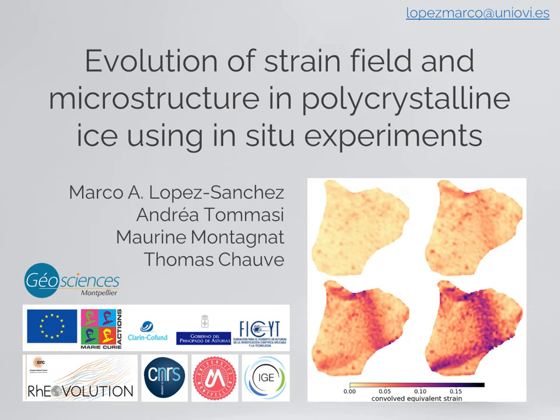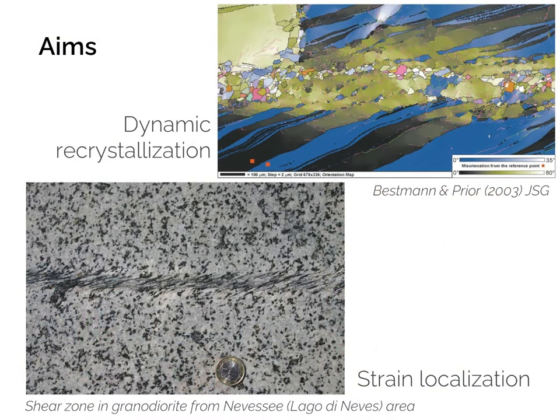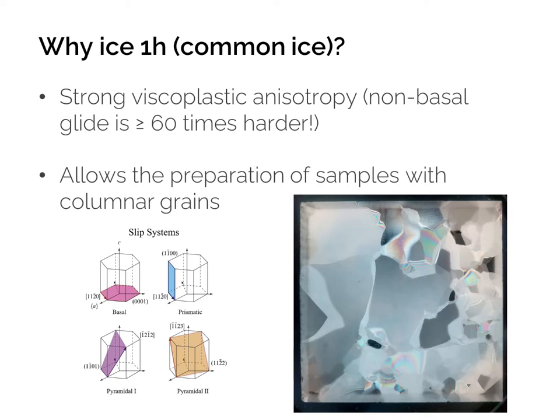This study was an effort between Andrea and myself, both from Geoscience Montpellier, and Maureen and Thomas from the University of Grenoble Alps. Our motivation is that we are very interested in studying how the strain field, the microstructure, and the crystallographic preferred orientation evolve over time during plastic deformation in aggregates, to understand two processes: dynamic recrystallization and strain localization. One of the materials we used for this was common ice, or Ice 1H.